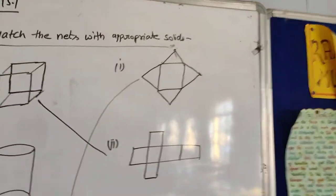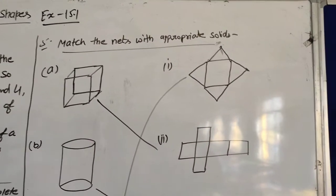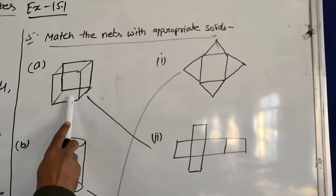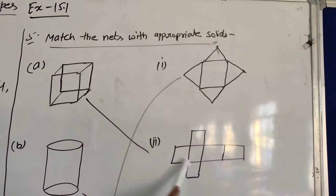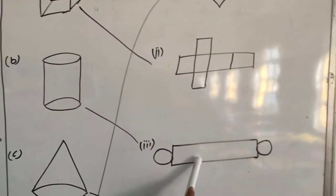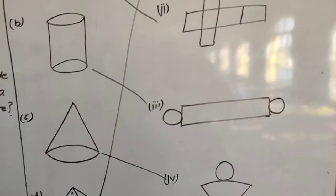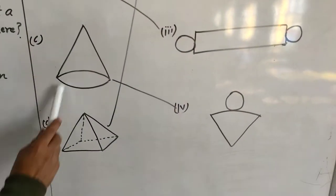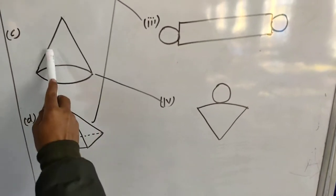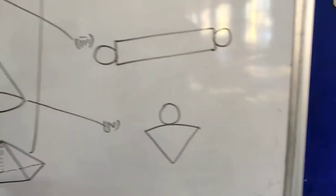Question number 5: Match the following nets with appropriate solids. This is the net form, this is the solid diagram. So for A, it is a cube. The correct option is the second one. B is cylinder, so the third option is correct. C is cone, so the fourth option is correct. This is the net form of a cone.